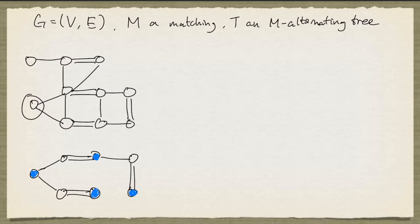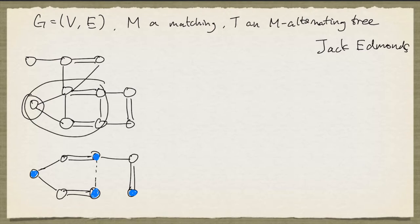The groundbreaking idea that Jack Edmonds had is to look at the cycle that you get after adding an edge that joins two nodes in the even set, and then shrink that to a single node — replacing all those nodes by one node. We call this set of nodes a blossom.